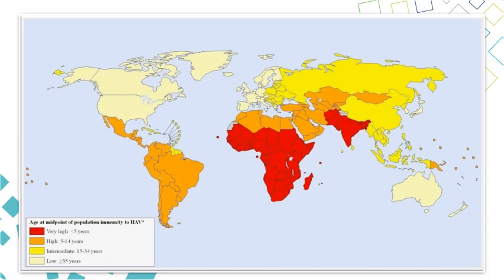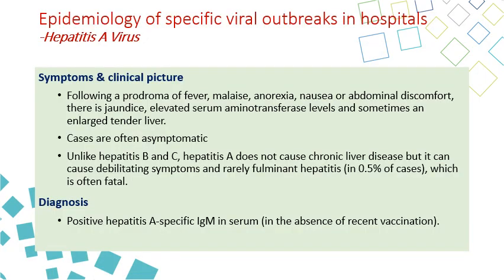Looking at the map, hepatitis A infection is mainly concentrated in developing countries in Africa, Asia, and South America. Symptoms are similar to other hepatitis types: fever, malaise, anorexia, nausea, abdominal discomfort, and progression to jaundice, elevated liver enzymes, and sometimes enlarged tender liver. Most cases are asymptomatic. Unlike hepatitis B and C, there is no chronicity, so it is a self-limiting disease. It is diagnosed by positive hepatitis A-specific immunoglobulin in serum.